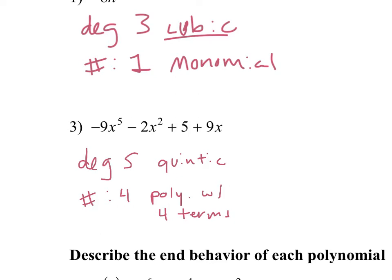What's in standard form? It's going to be nine x to the five, minus two x squared, plus nine x, plus five. Perfect. So we start with our highest exponent. So x to the five is our highest, and then we just go to the second highest, third, and then our smallest.